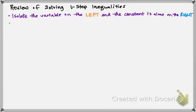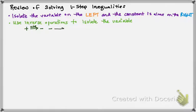We're going to use inverse operations to isolate the variable. And so what that means is if I have addition in my problem, I'm going to use subtraction. If I have subtraction in my problem, I'm going to use addition.